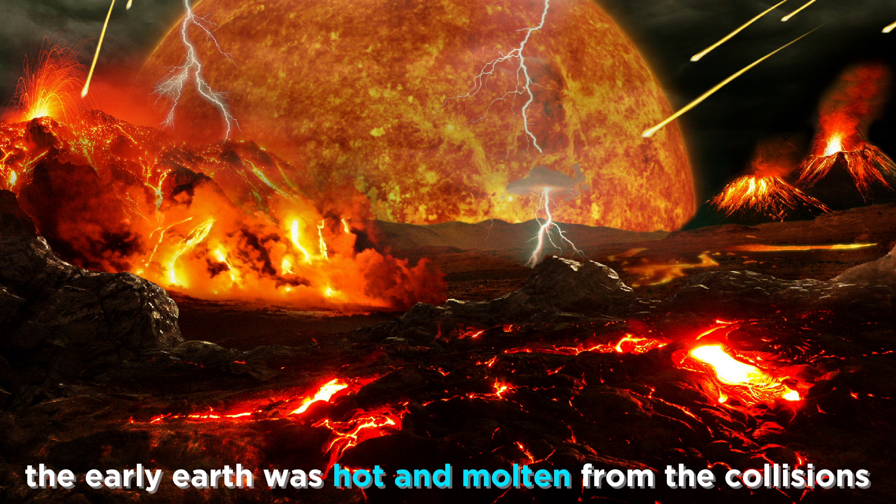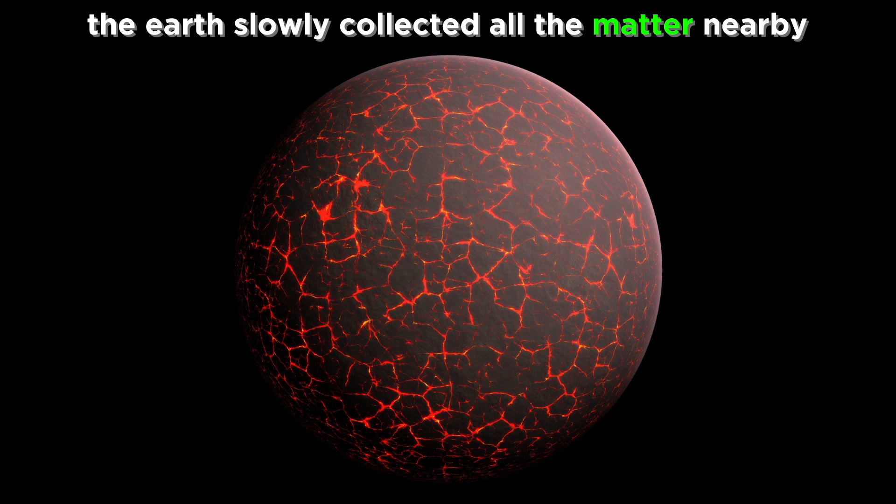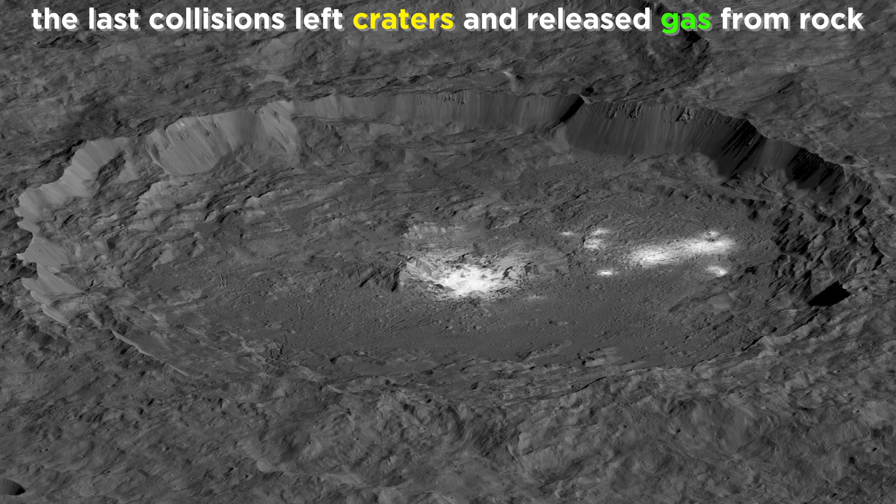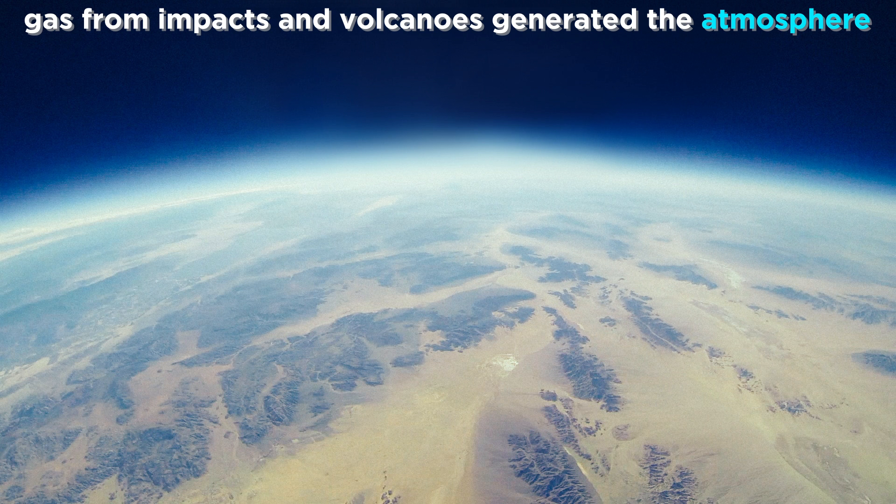One of these rocky objects was the early Earth, which was in a largely molten state due to all the heat generated by these incredible collisions. Once most of the matter within Earth's orbital radius had been collected, collisions became more rare, giving the Earth the opportunity to cool down and form a layer of crust, with the last round of major collisions producing craters and releasing huge quantities of gas trapped in the rock. This gas remained gravitationally bound to the planet, along with other gas ejected during volcanic eruptions, thus generating the early atmosphere.